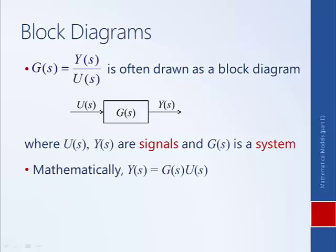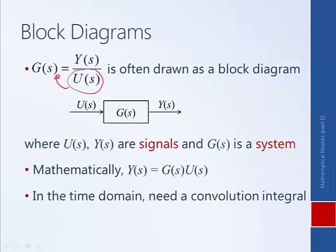Mathematically, the output is equal to the transfer function times the input. This is a very simple way to calculate the output signal — it's the transfer function multiplied by the input signal. If we were in the time domain, we would need to use the convolution integral, which is much more difficult than simple multiplication.